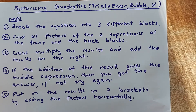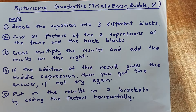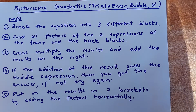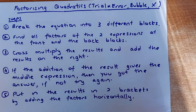This is the most convenient and fastest way, but you need to be able to do the steps in a logical way. The steps are as follows: break the equation into three different blocks; find all the factors of the first and the last block; cross multiply the results and add them on the right — if the addition gives the middle expression, you have the answer; if not, try again — that's why it is called the trial and error method. Finally, put the two brackets and you have factorized the expression.